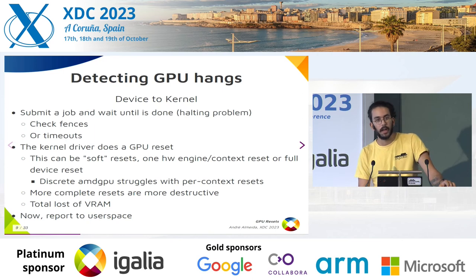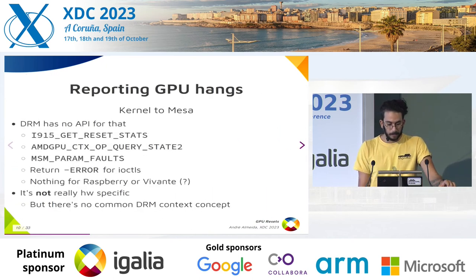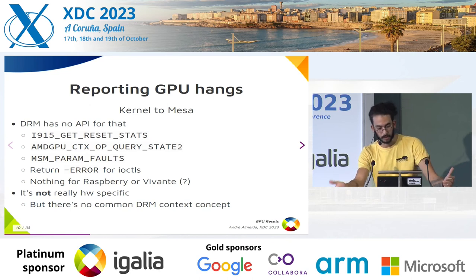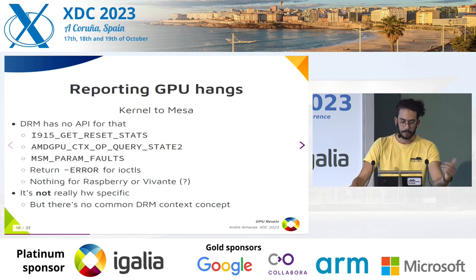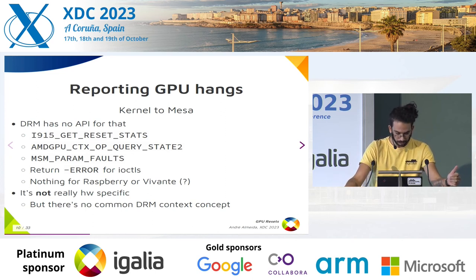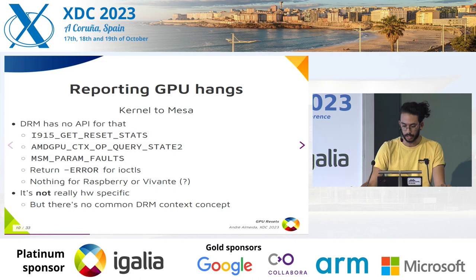The kernel driver saw that the hardware was stuck, and we need to report that to user space. Now the kernel and Mesa will talk together. But unfortunately, DRM has no API for that, so each driver implements this in a different way. For Intel, we have get_reset_stats. On AMD, we have context_op_query. We also have MSM pagefaults. Some drivers just don't have a specific API — they just return errors for ioctls. And I wasn't able to find any reset reporting for Raspberry or Vivante. But this part is not really hardware-specific — we could have a common DRM API for that, which would be very helpful for the whole stack.